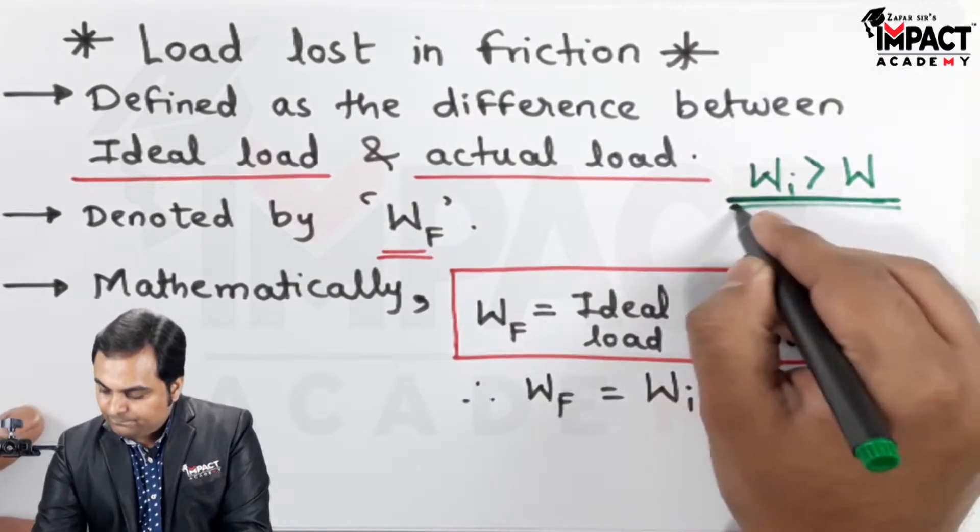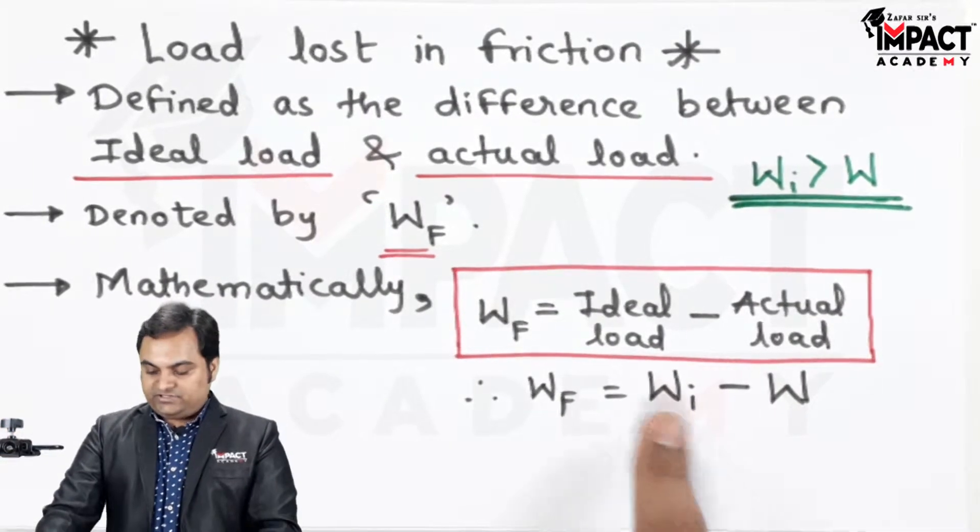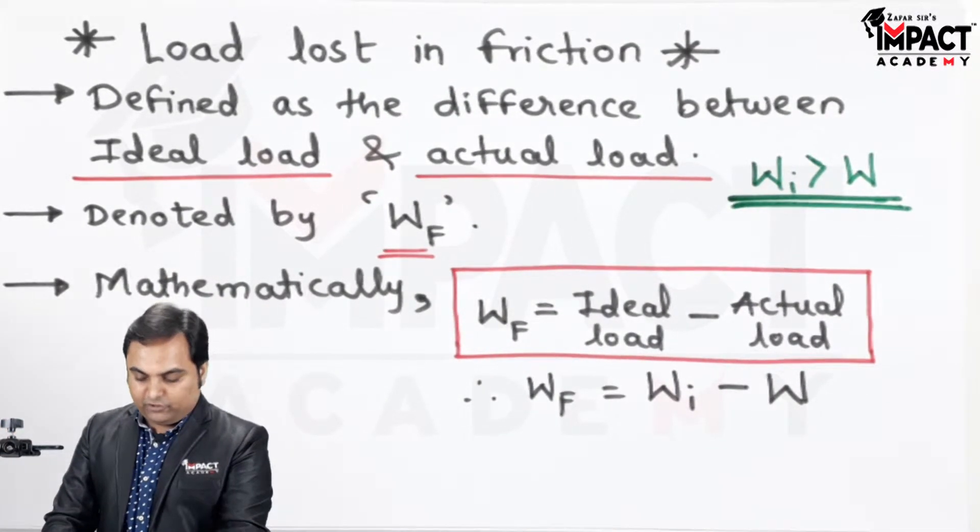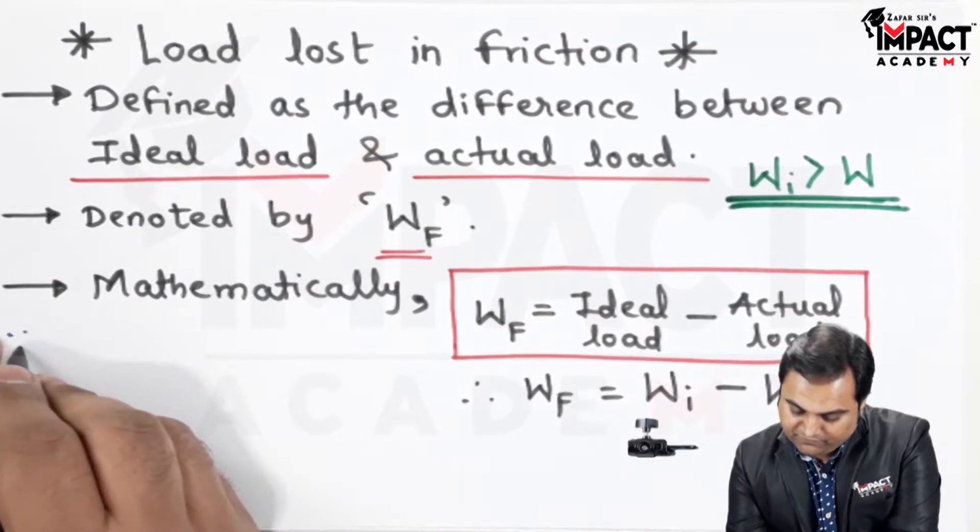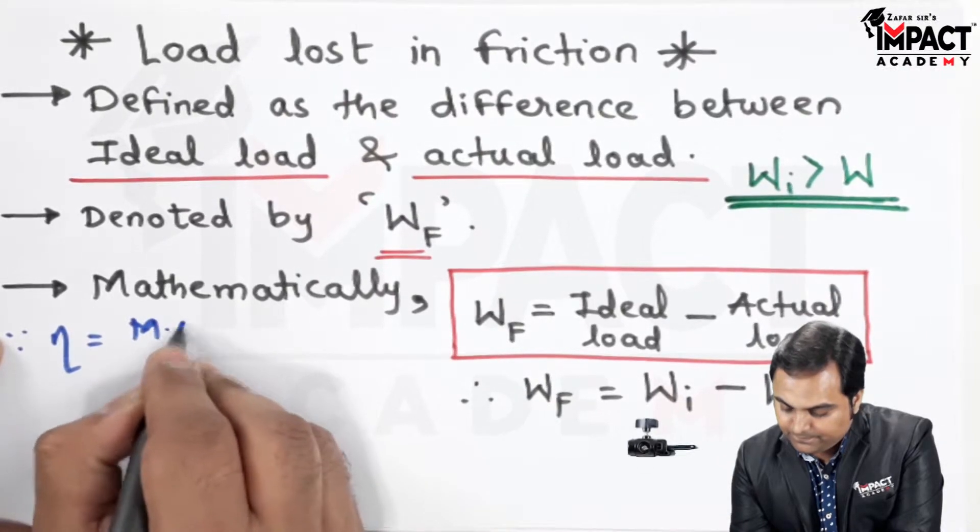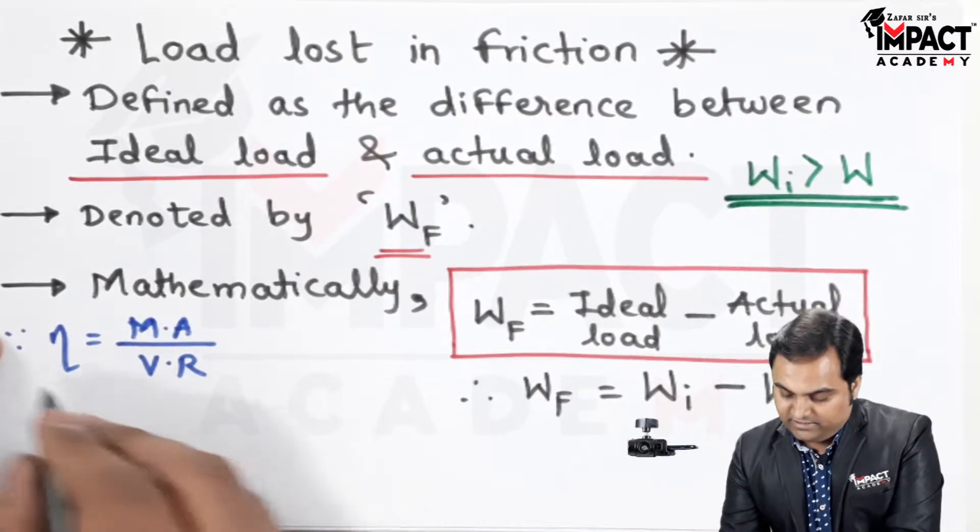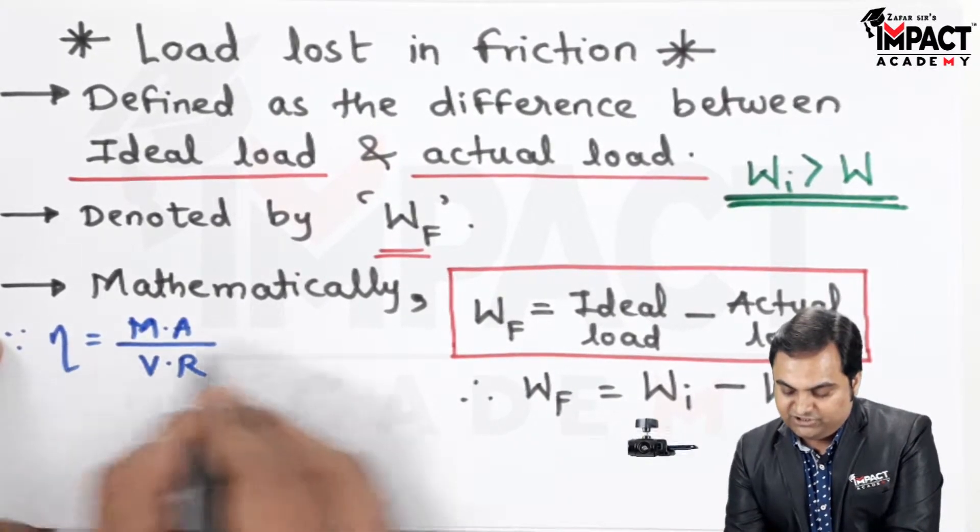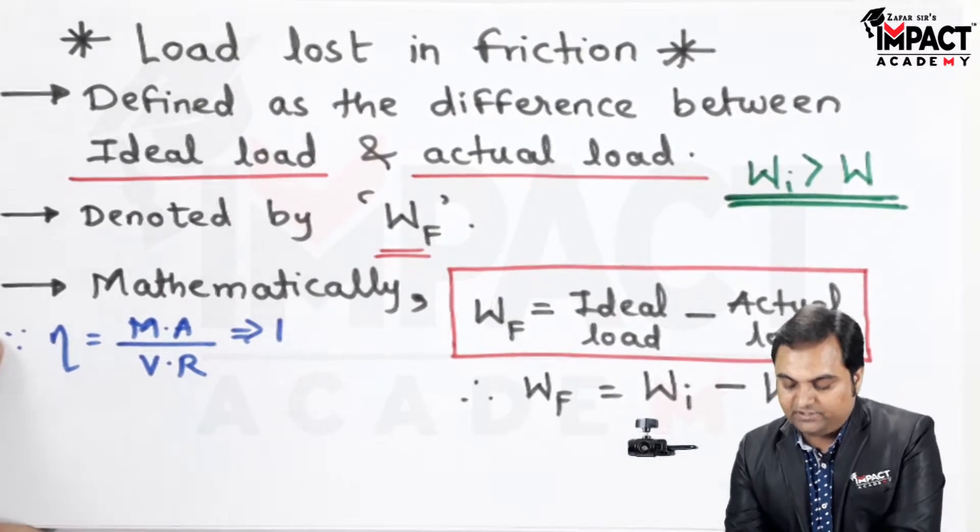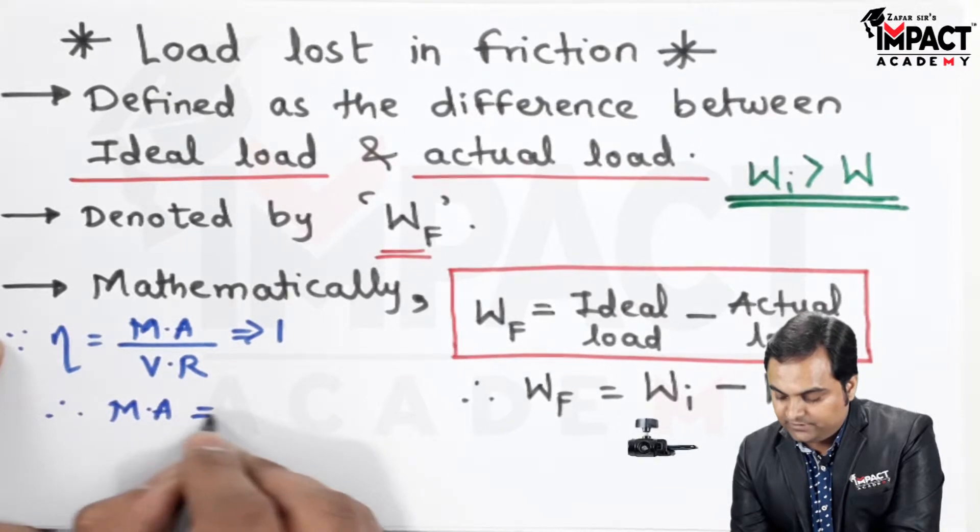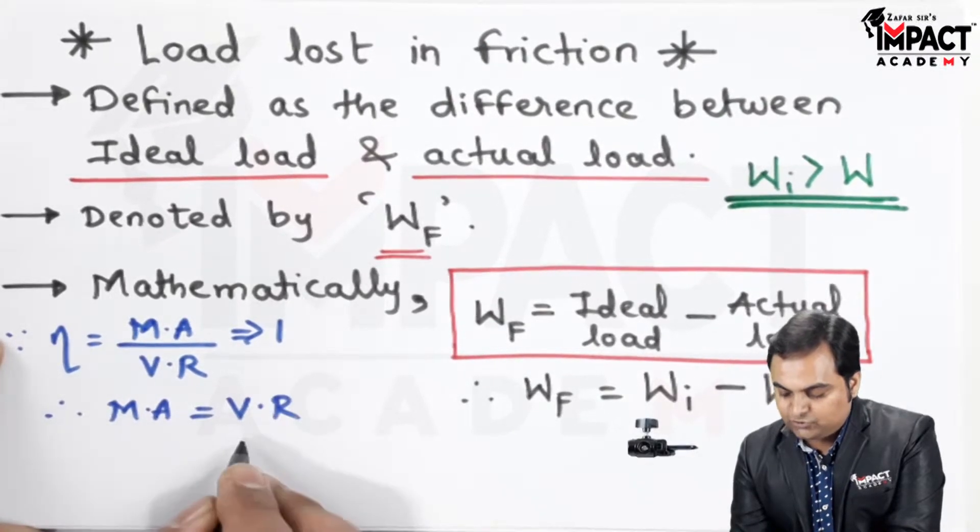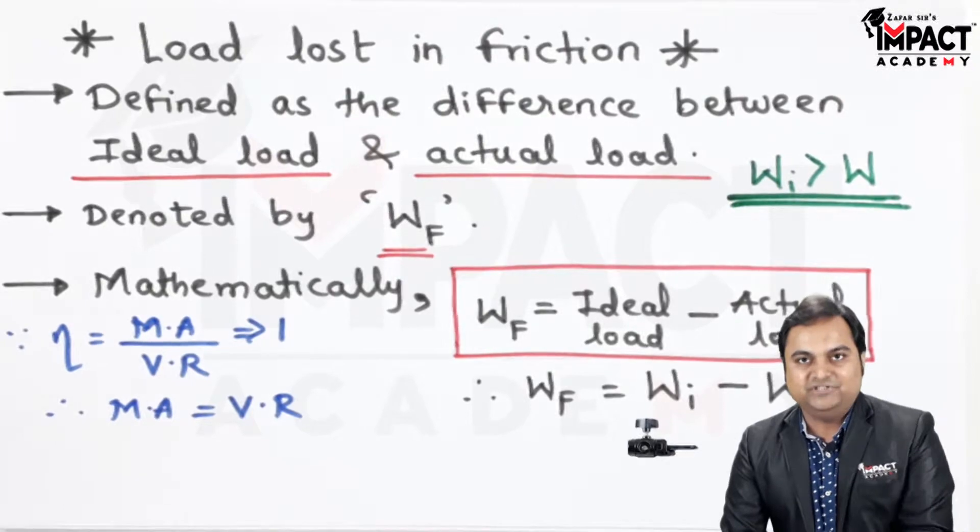And this W_I value we can get from the efficiency formula. Since efficiency is given by MA upon VR, and if the machine is ideal, efficiency is 1 or we can say 100%. So therefore MA becomes equal to VR, and this is the case to be used only in case of an ideal machine.